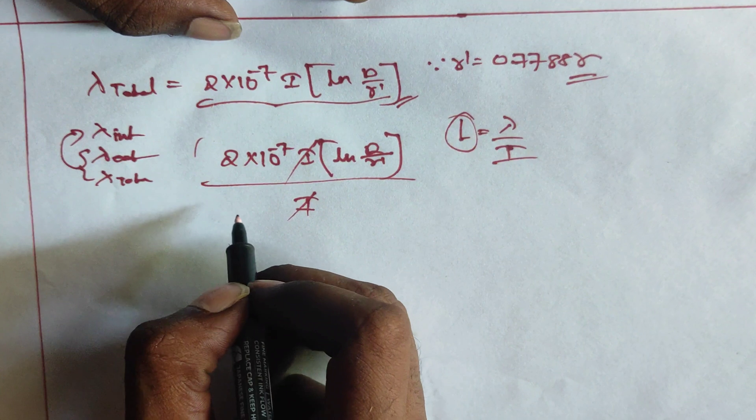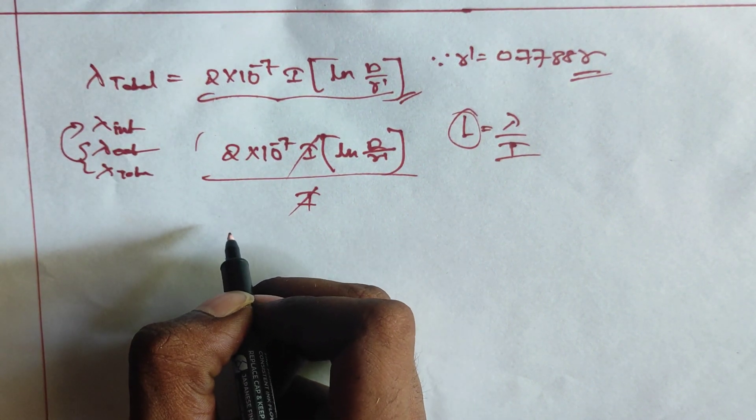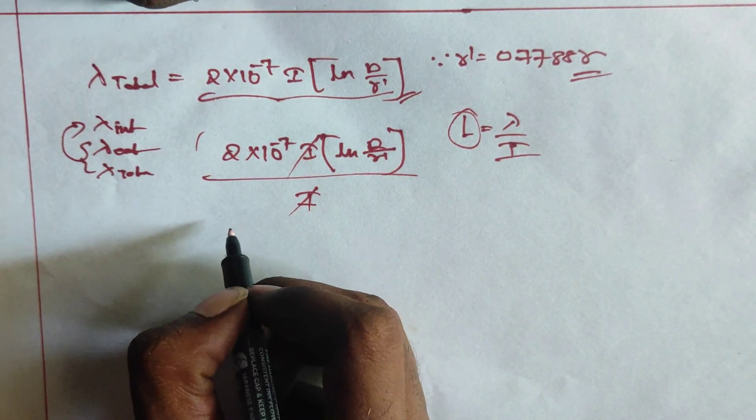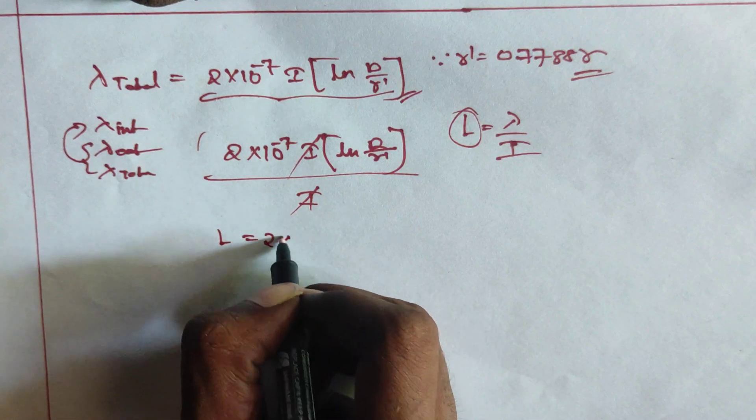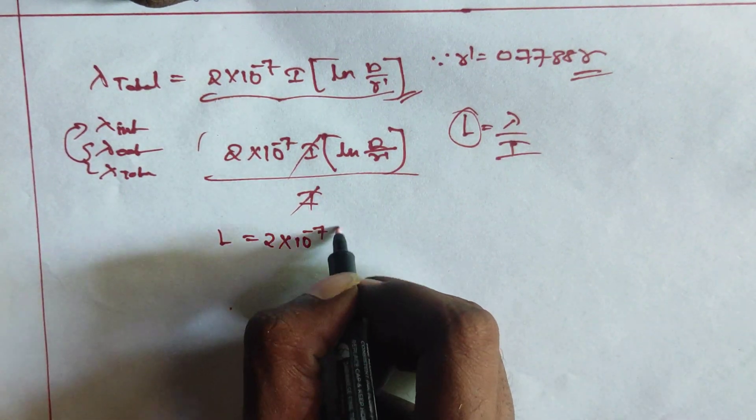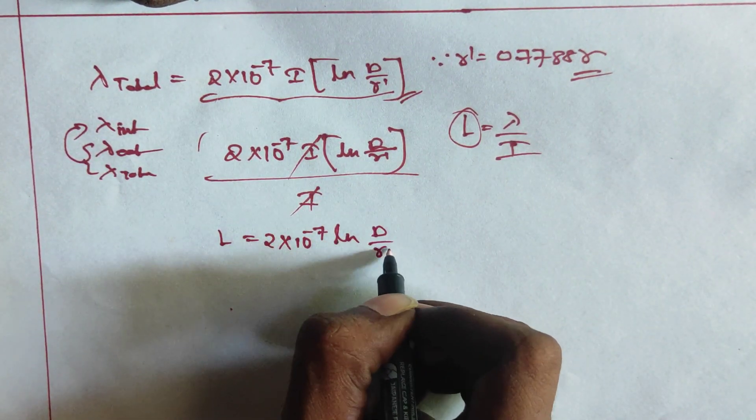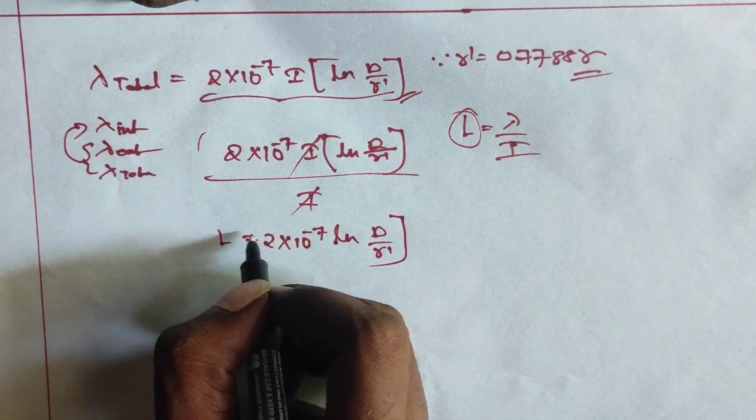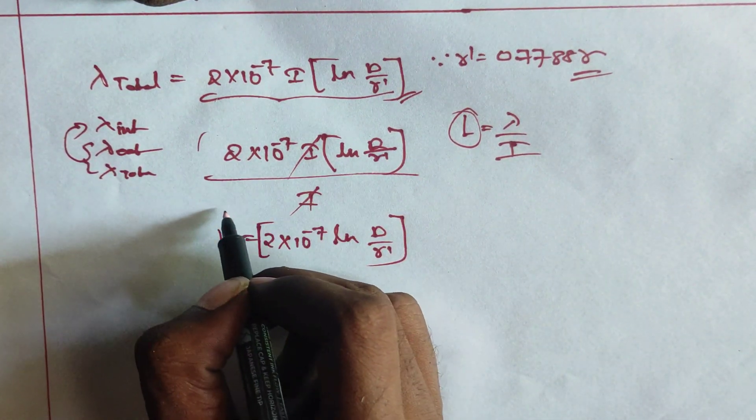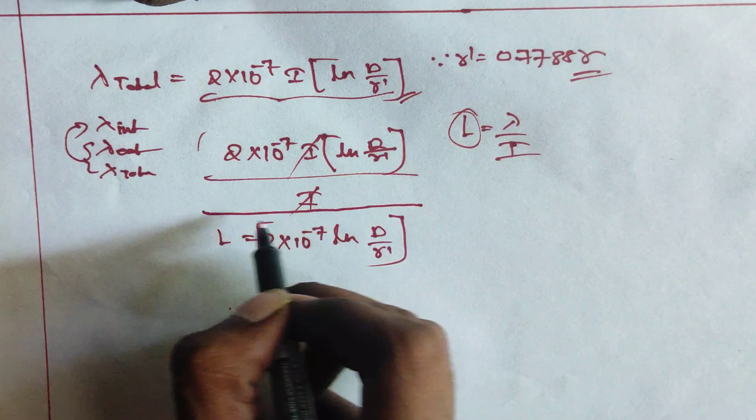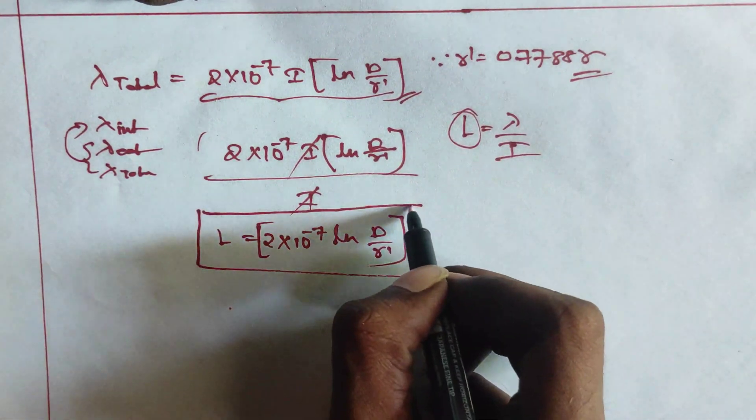Therefore, the remainder expression is called the inductance expression for single phase 2 wire transmission line. That, L is equals to 2 into 10 power minus 7, log of D by R dash. This is a very, very important formula to be remembered for doing the problems.